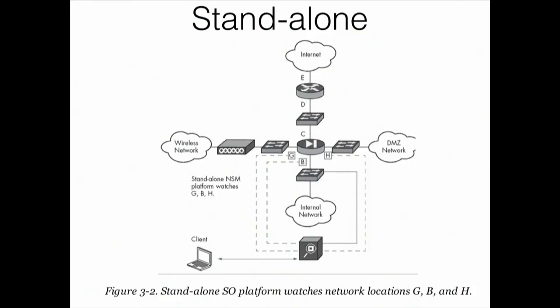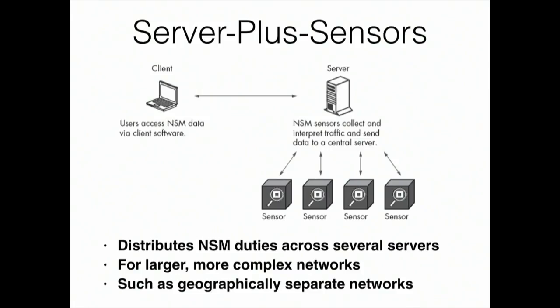The standalone platform can get traffic from all segments and analyze it all in one box — it gathers and analyzes all in one place. Server plus sensors is different: you've got a bunch of sensors out there forwarding data to one server which analyzes it. Some processing happens at the sensor level and more happens at the server. This is what you have to do if you have a large network spanning the globe — you can't possibly have one box getting it all. You have to have sensors in each location forwarding to some central place for analysis.